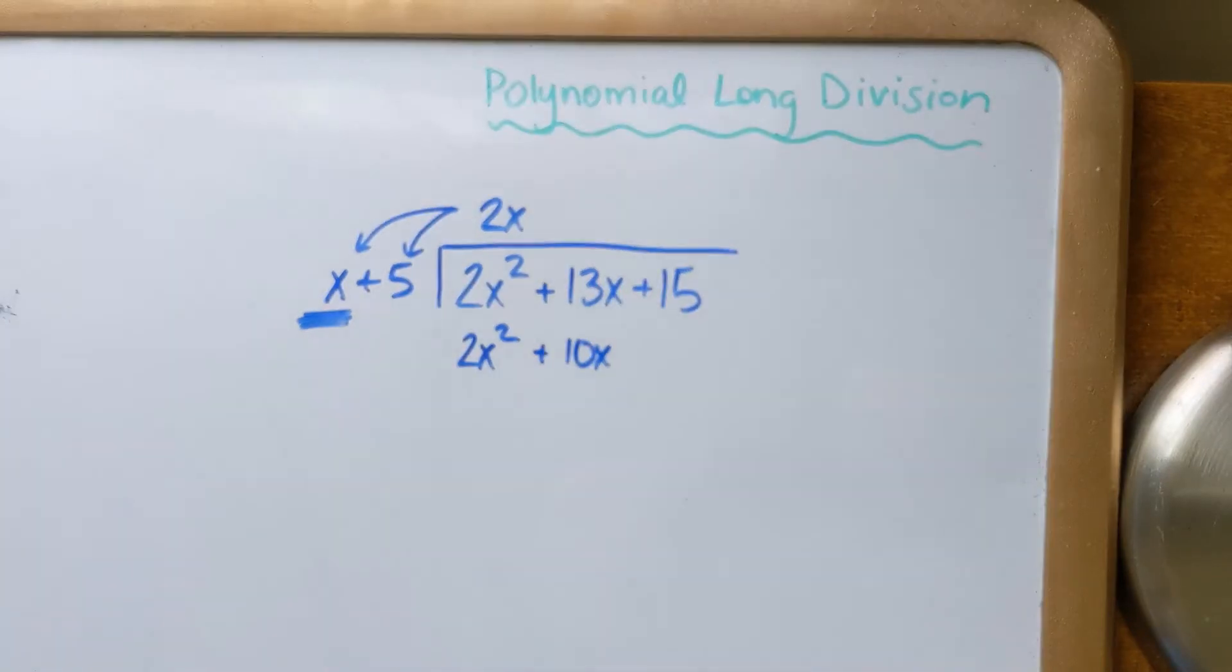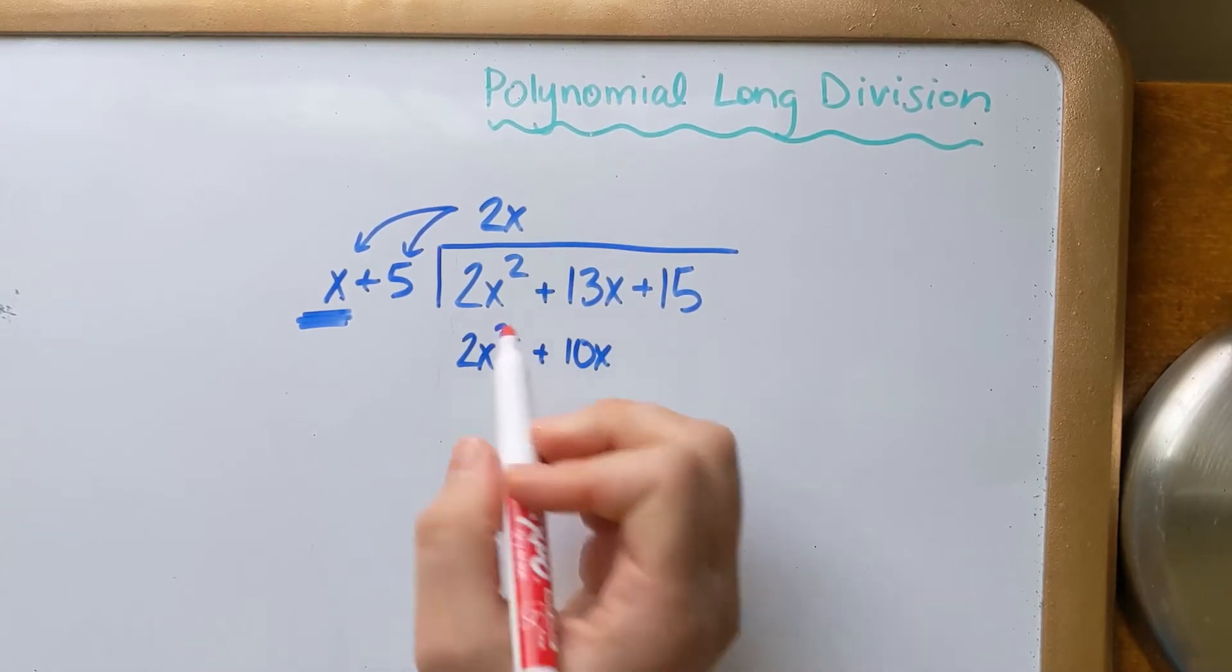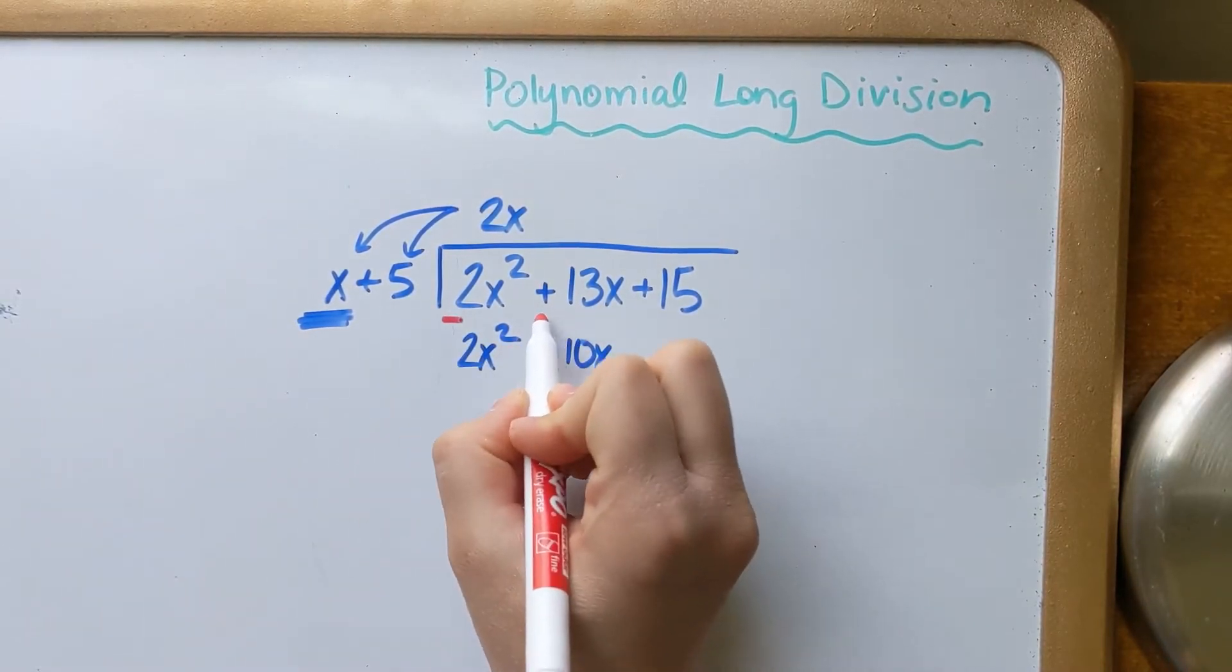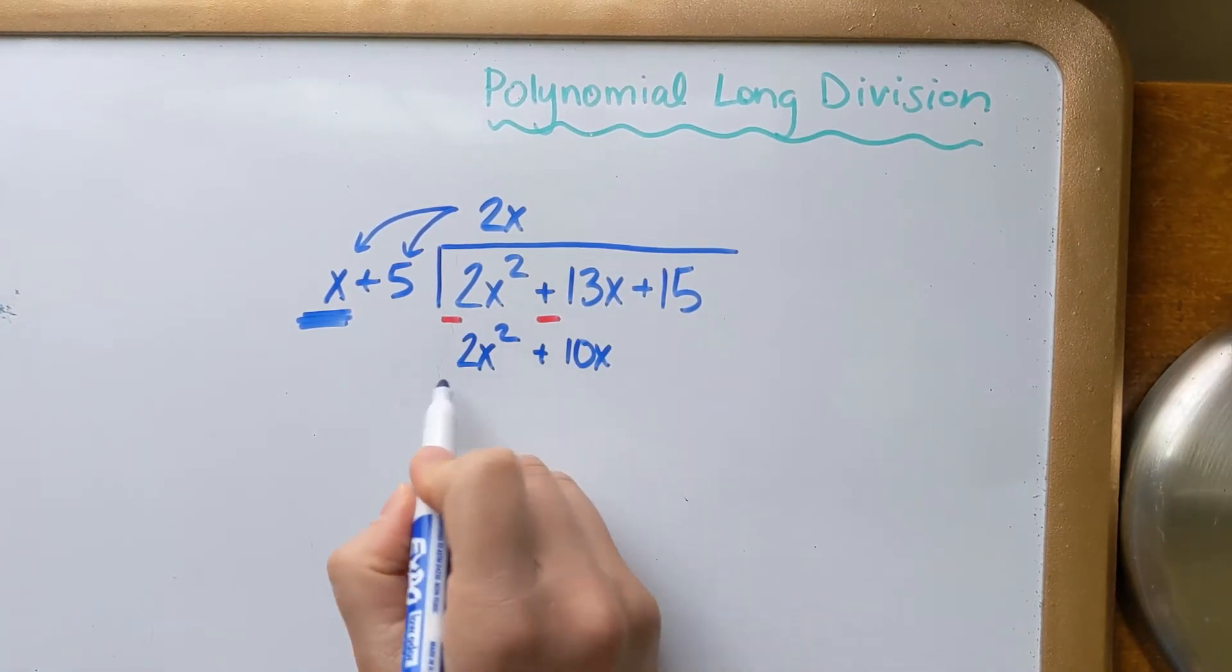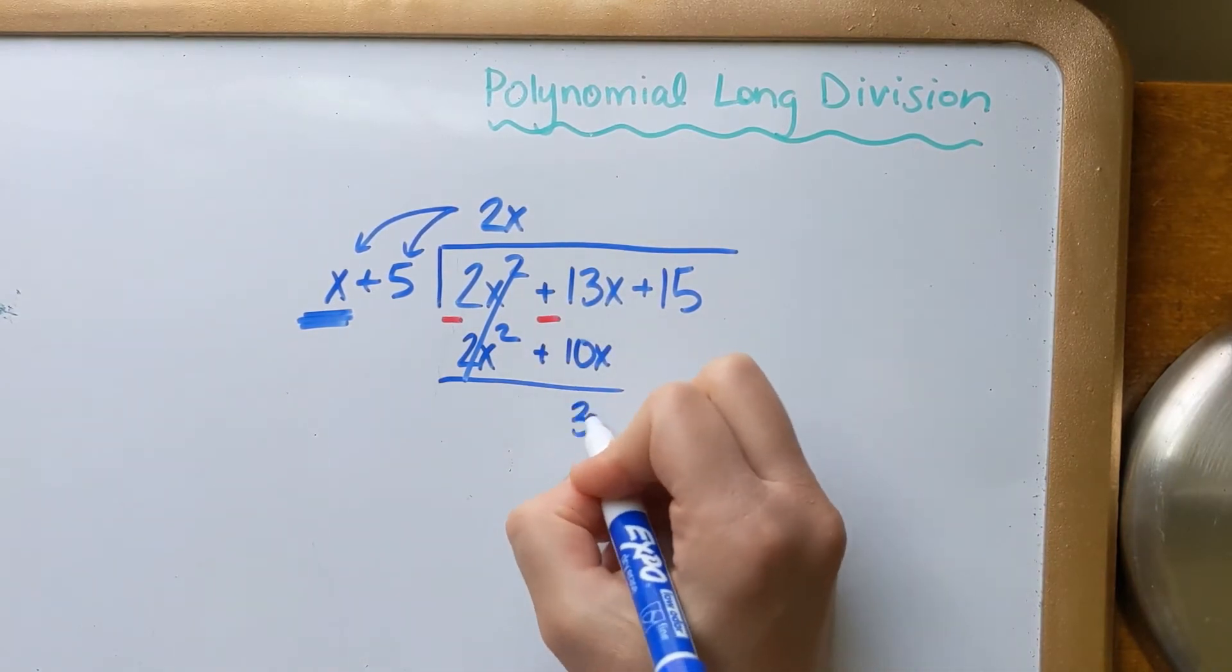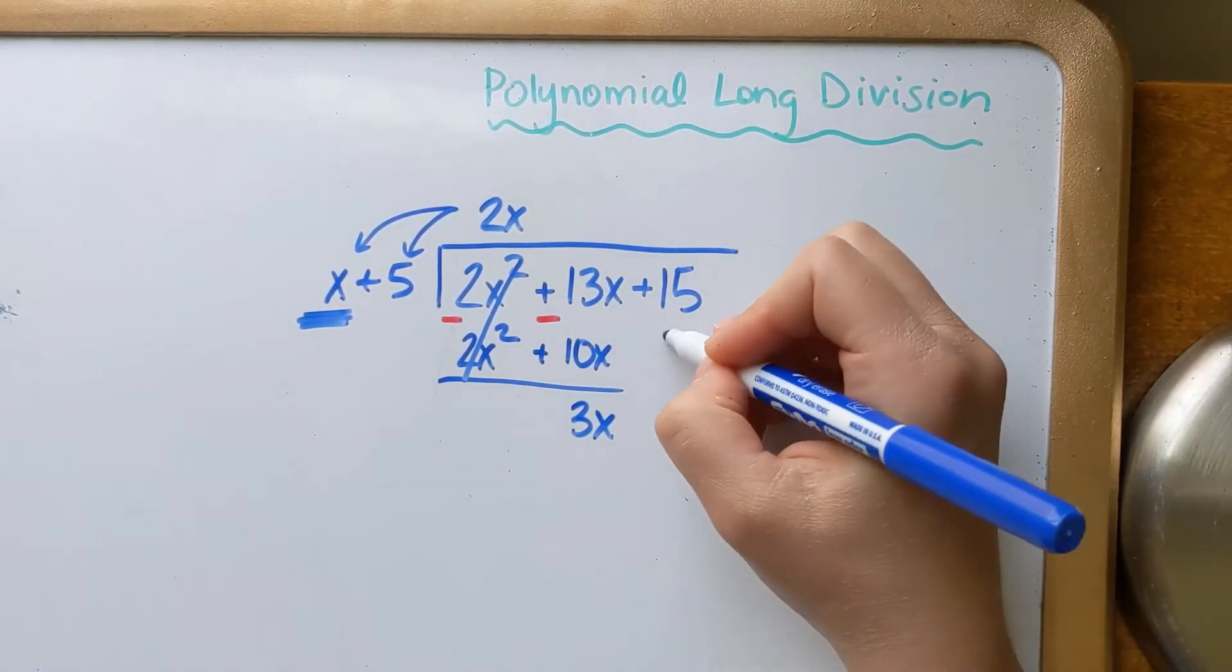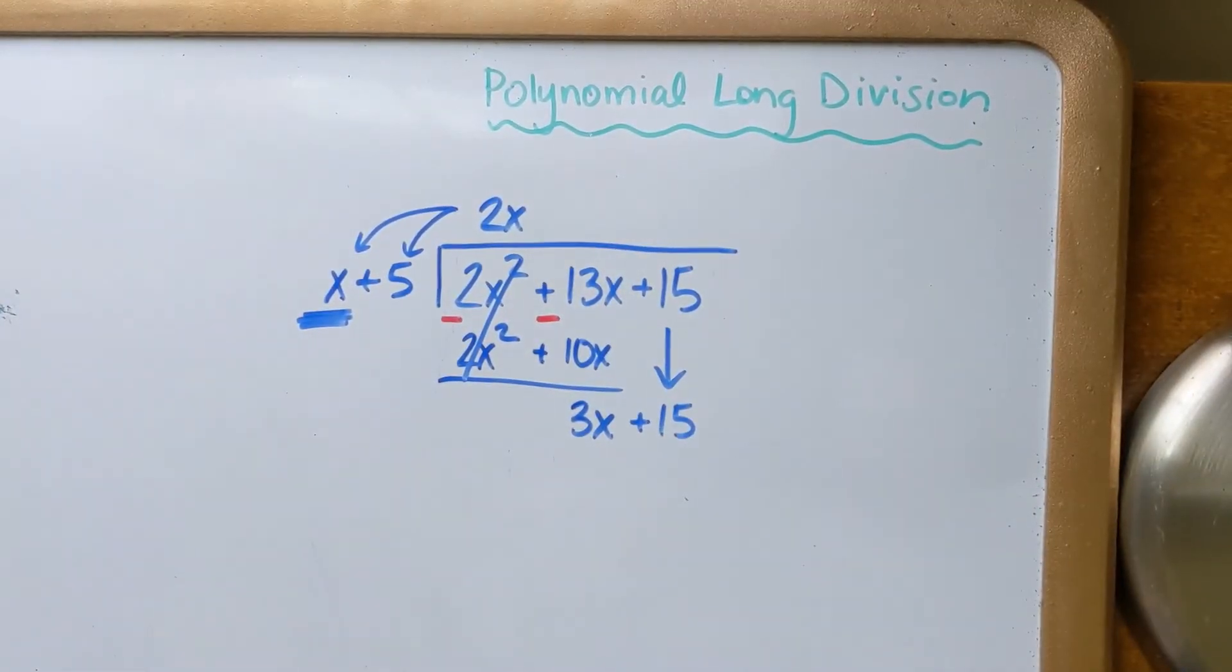Once you do that, just like in elementary school division, you subtract. Now this can get tricky because you have a couple terms. So what I like to do is I actually, and I'm going to do this in a different color, I like to write it in between each of the things that I'm subtracting. And if I happen to have any double negatives, I like to make note of that. We'll do a problem with that later. Okay, so 2x squared minus 2x squared is 0, nothing. And then 13x minus 10x is 3x. Now just like before, you can go ahead and drop that down.